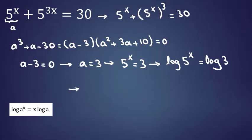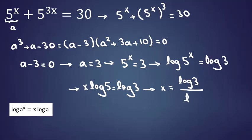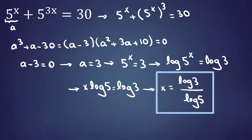By the logarithm rules, you can take x in front of the log. So x log 5 equals log 3. If we divide both sides by log 5, we get x equals log 3 over log 5. The answer is log 3 over log 5.